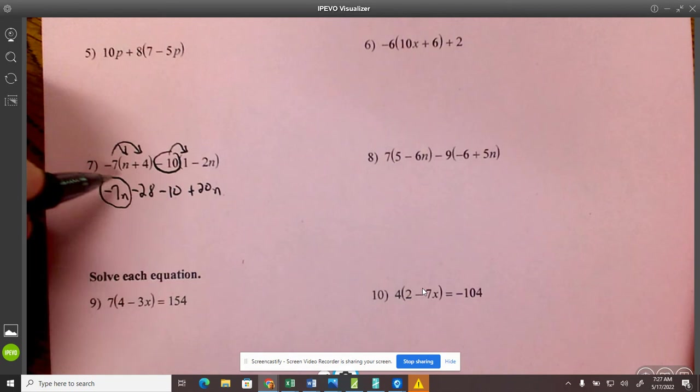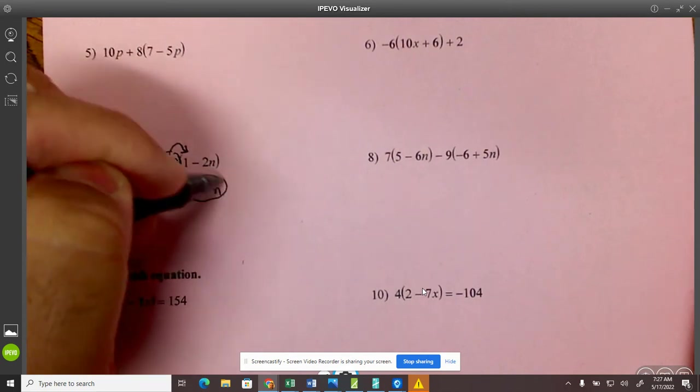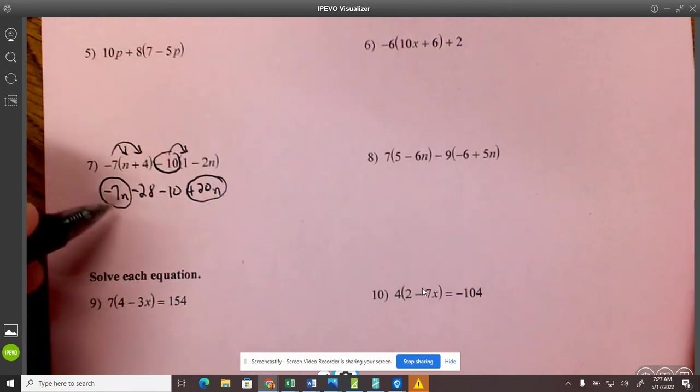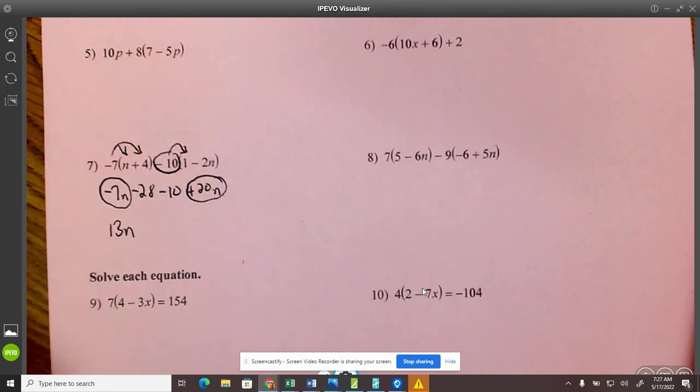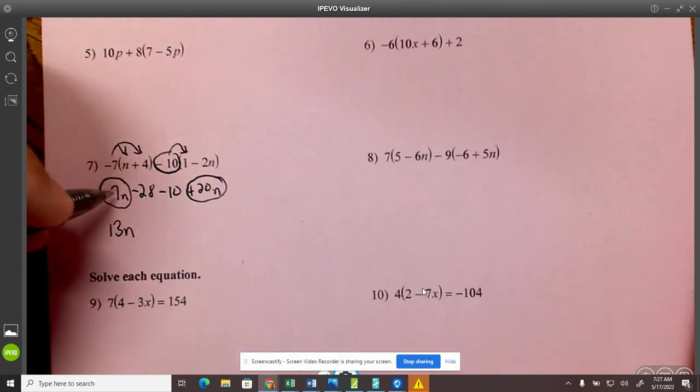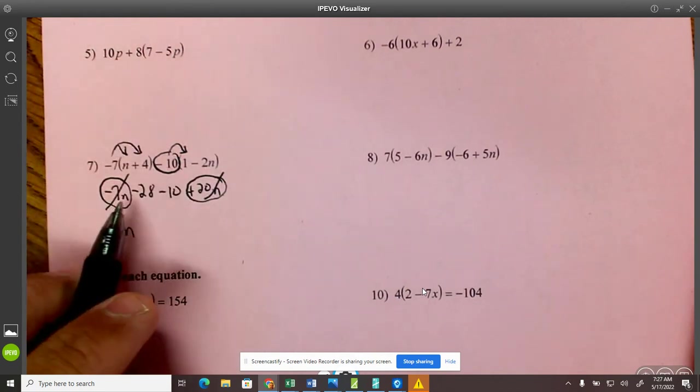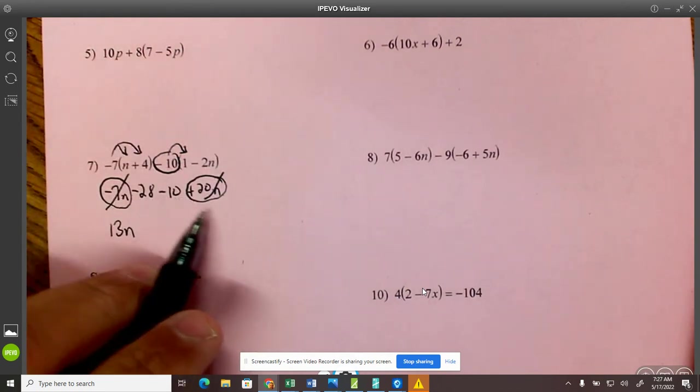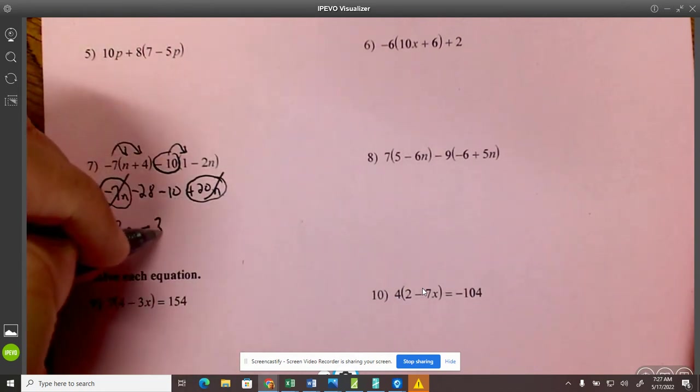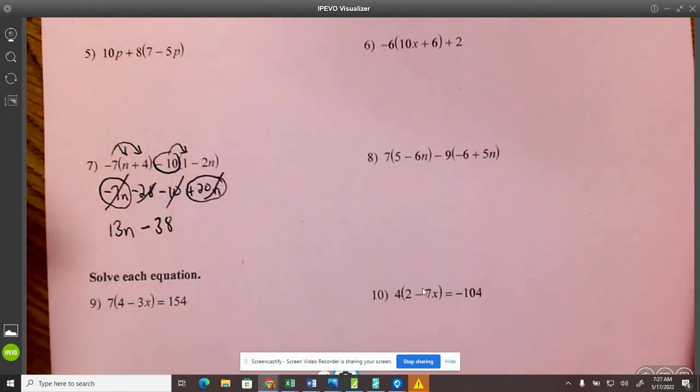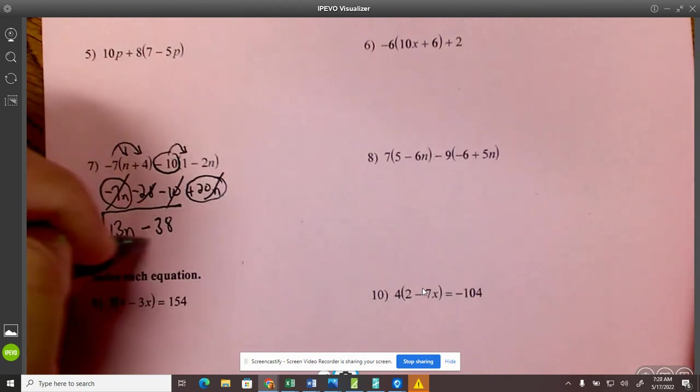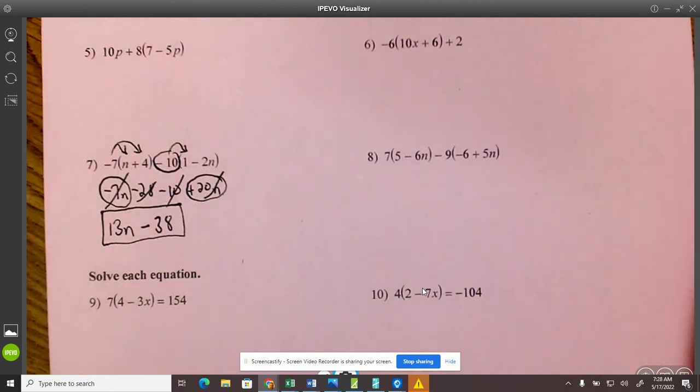So now I'm going to combine like terms. I have negative 7n and positive 20n. So negative 7 plus 20 gives me 13n. So I took care of those. And now I have negative 28 minus 10. So that's minus 38. And I can't combine anything else. That's as far as I can go. So that is my answer.